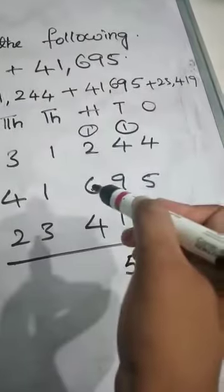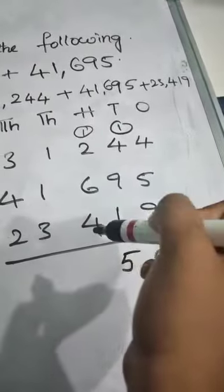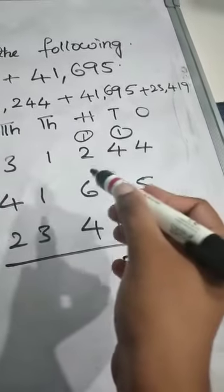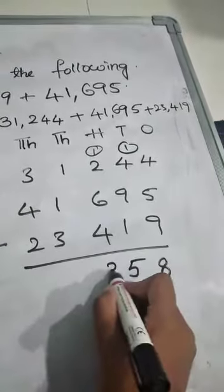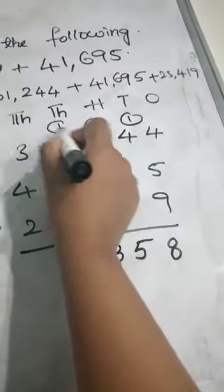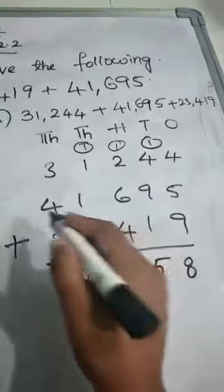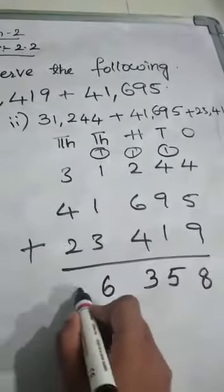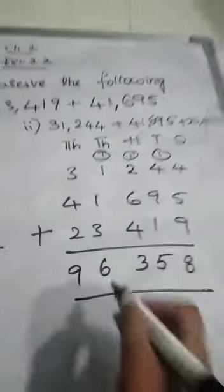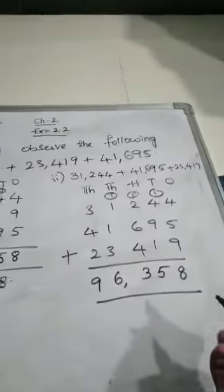So 6 plus 4, 10. 10 plus 2, 12. 12 plus 1, 13. So 3, again 1 carry here. 3, 4, 5, 6. 4 plus 2, 6. 6 plus 3, 9. We got the same result. 96,358.